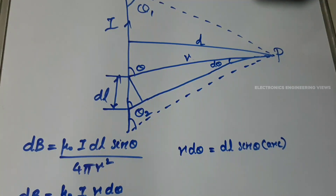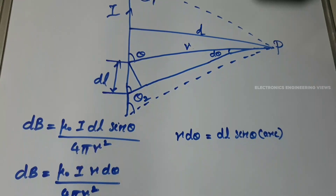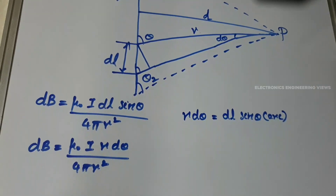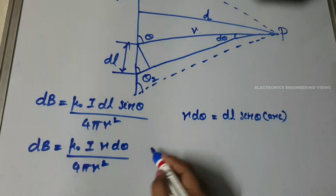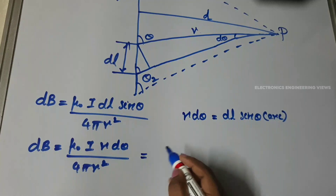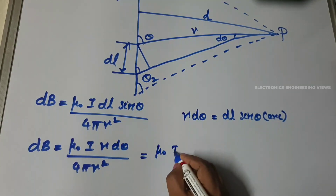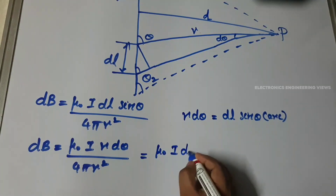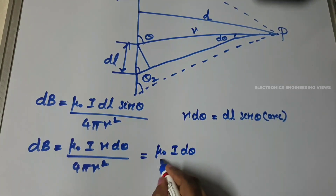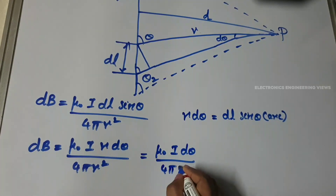In the numerator, one r will be cancelled by the r in the denominator. So the equation becomes dB is equal to μ₀ · I · dθ divided by 4π · r.